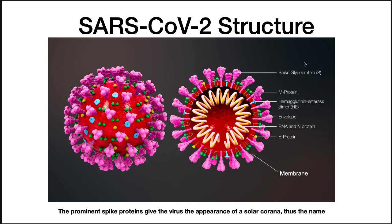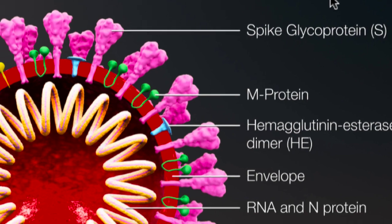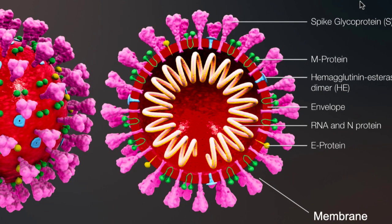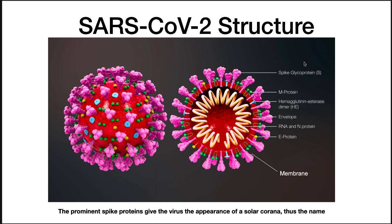SARS-CoV-2 is an enveloped virus with a positive single-stranded RNA genome. The membrane is decorated with a number of proteins, with the spike glycoprotein probably being the most important for immunity. The prominent spike proteins give the virus the appearance of a solar corona, hence the name of this virus family. This virus family has been around for years, but most of the time they just cause simple colds.